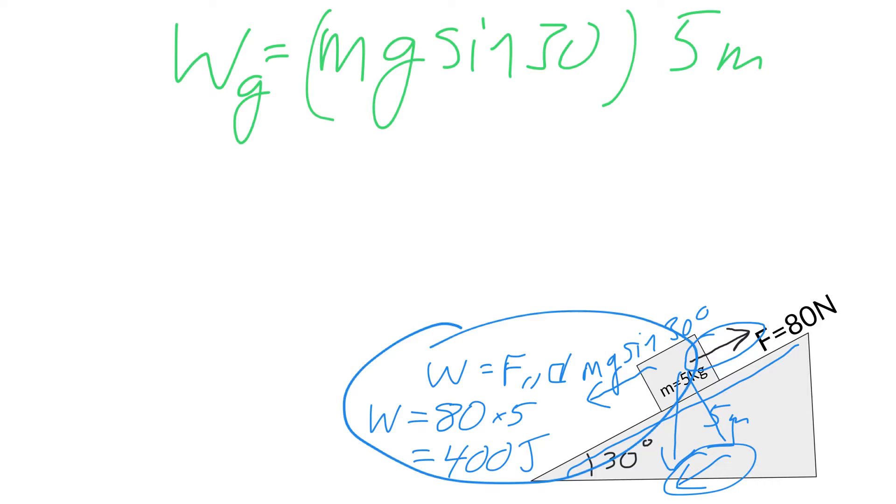Now one thing to realize here is my distance is going up the ramp here. And my force of gravity, or the component, is coming down the ramp. And those are in opposite directions. So we do want to make sure that we show that just with a simple negative sign here, that they're in opposite directions.